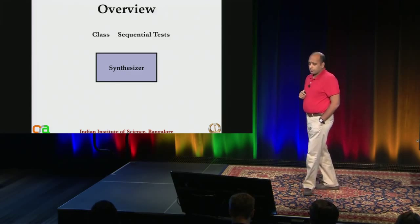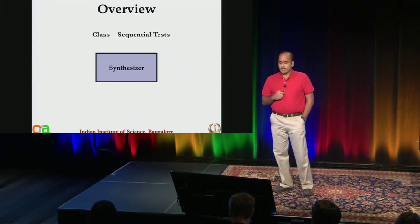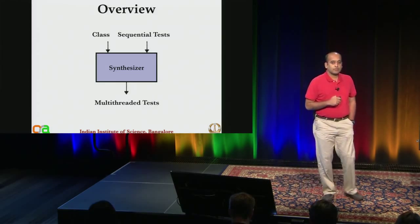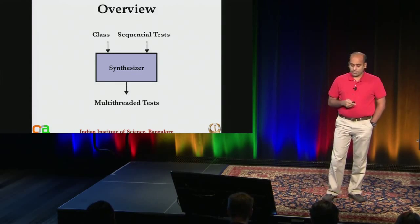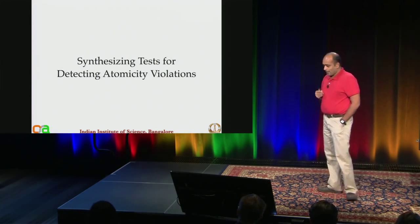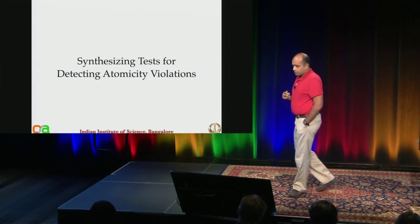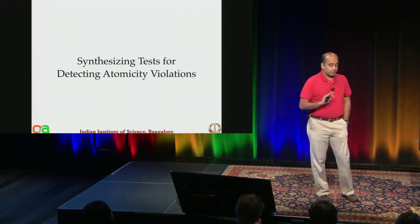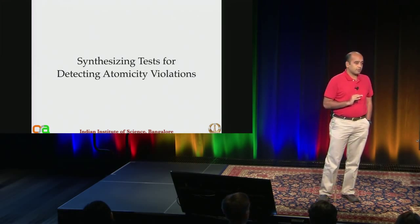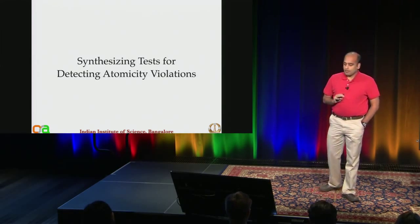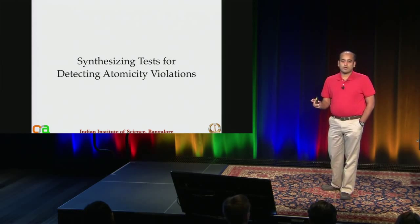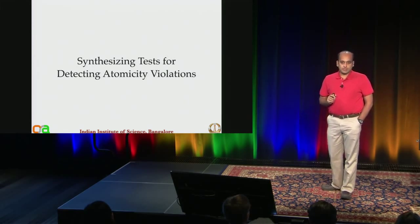To provide an overview: you take a class and a set of sequential tests, provide them to our synthesizer, and it will output a set of multithreaded tests. We have done work on synthesizing tests for exposing various kinds of concurrency bugs, but in this talk I'll give you an instance of how we do this for detecting atomicity violations.